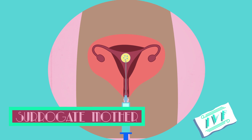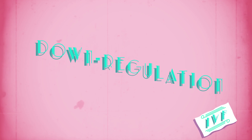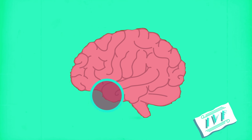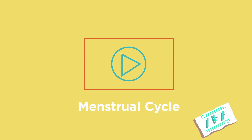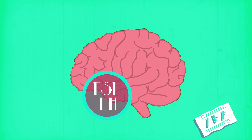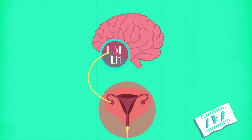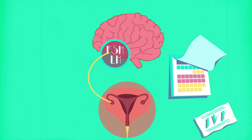Let's look at the IVF process in more detail. The first step is called down regulation. Drugs are used to turn off a woman's ovaries by suppressing the production of the hormones FSH and LH. FSH and LH are the hormones that trigger egg development and ovulation during a woman's monthly cycle. Turning FSH and LH off suppresses a woman's natural menstrual cycle, making the stages of treatment more effective. This happens for about two weeks.